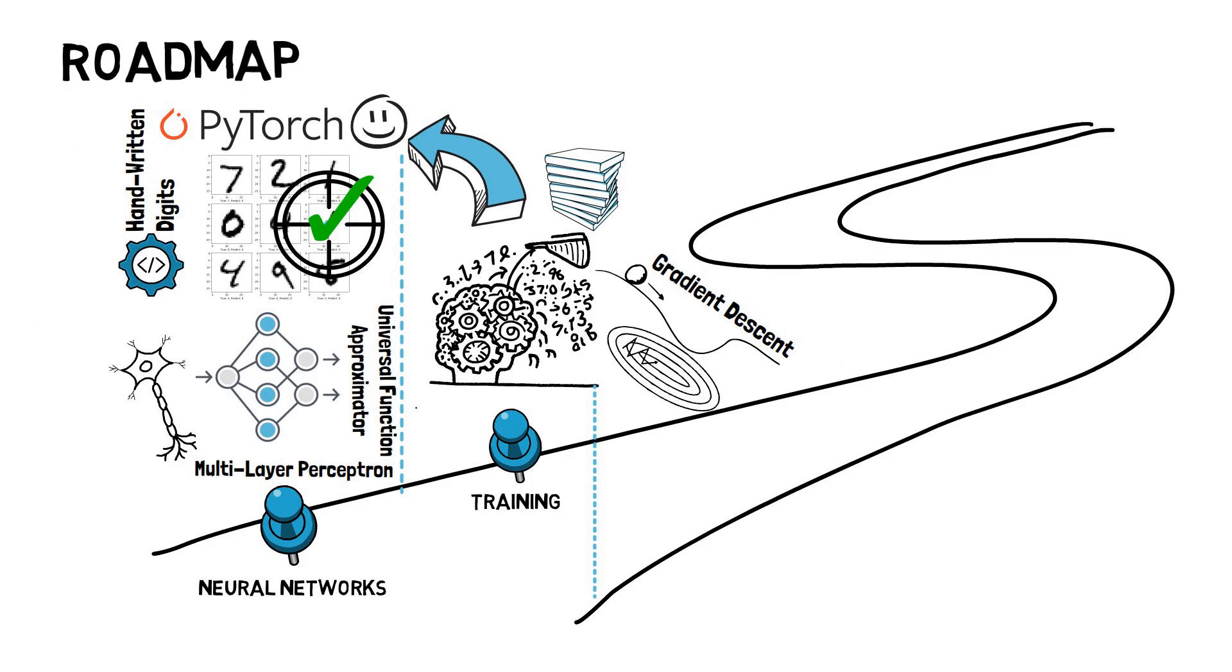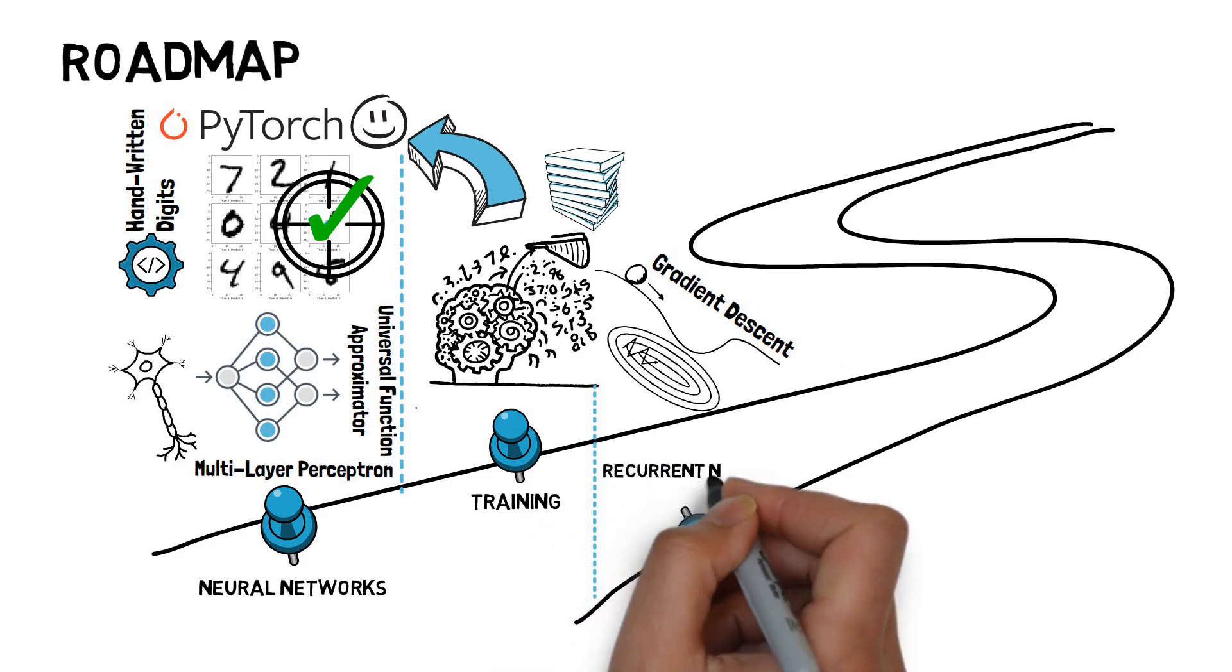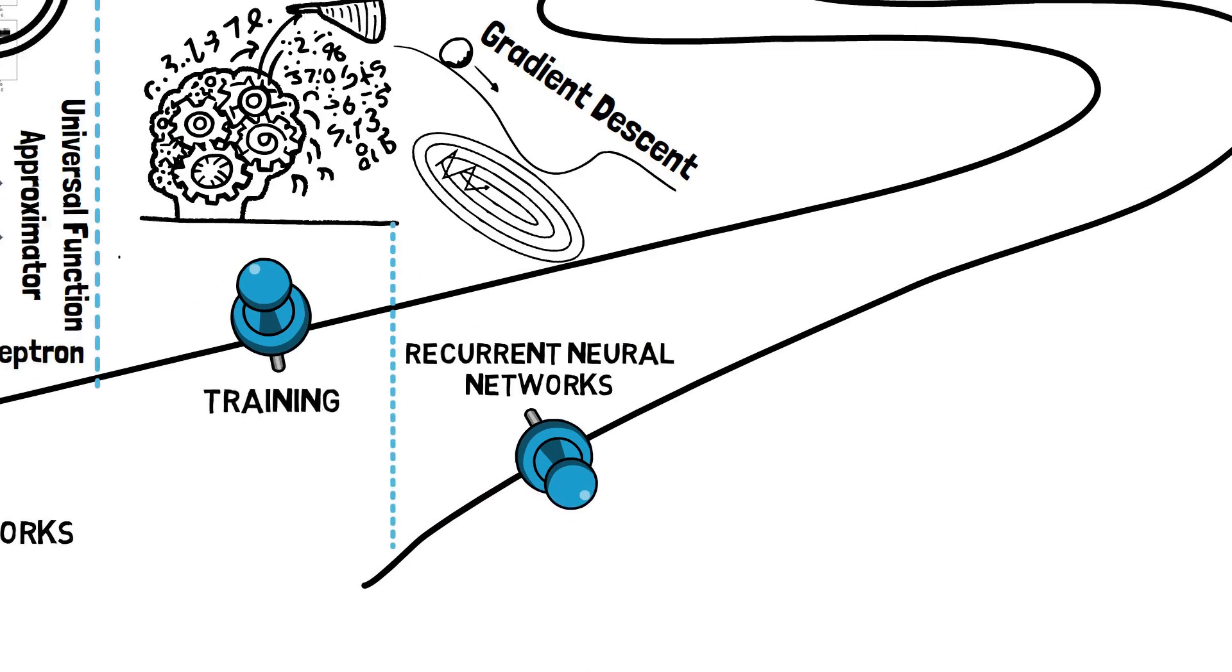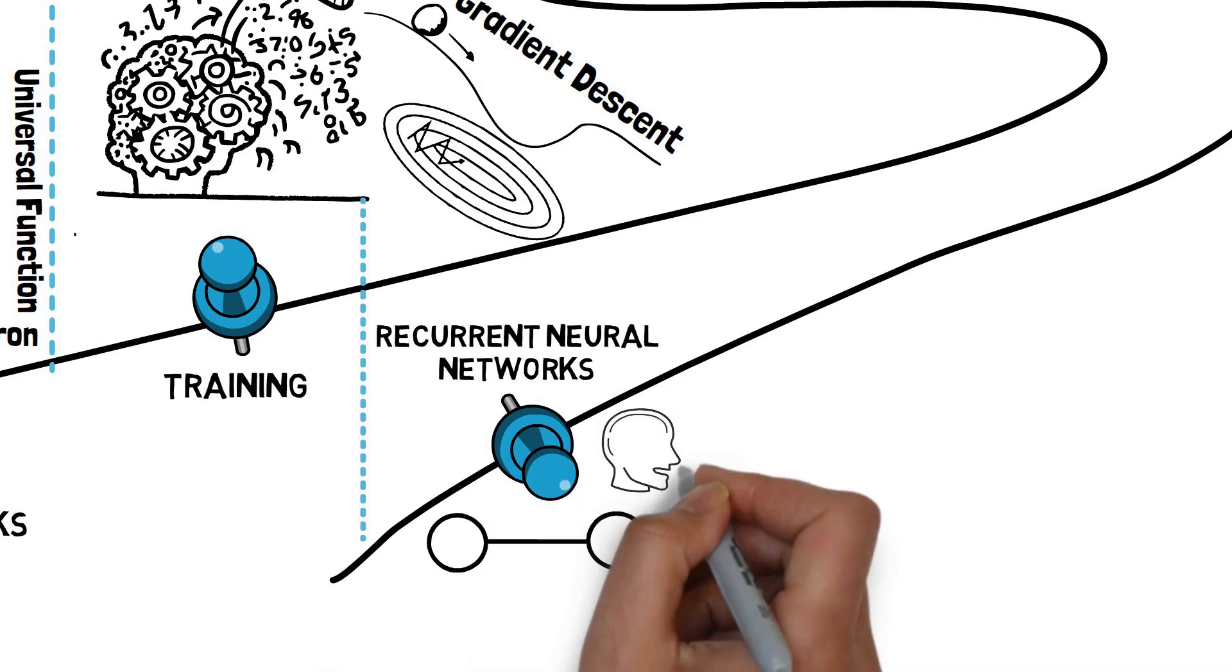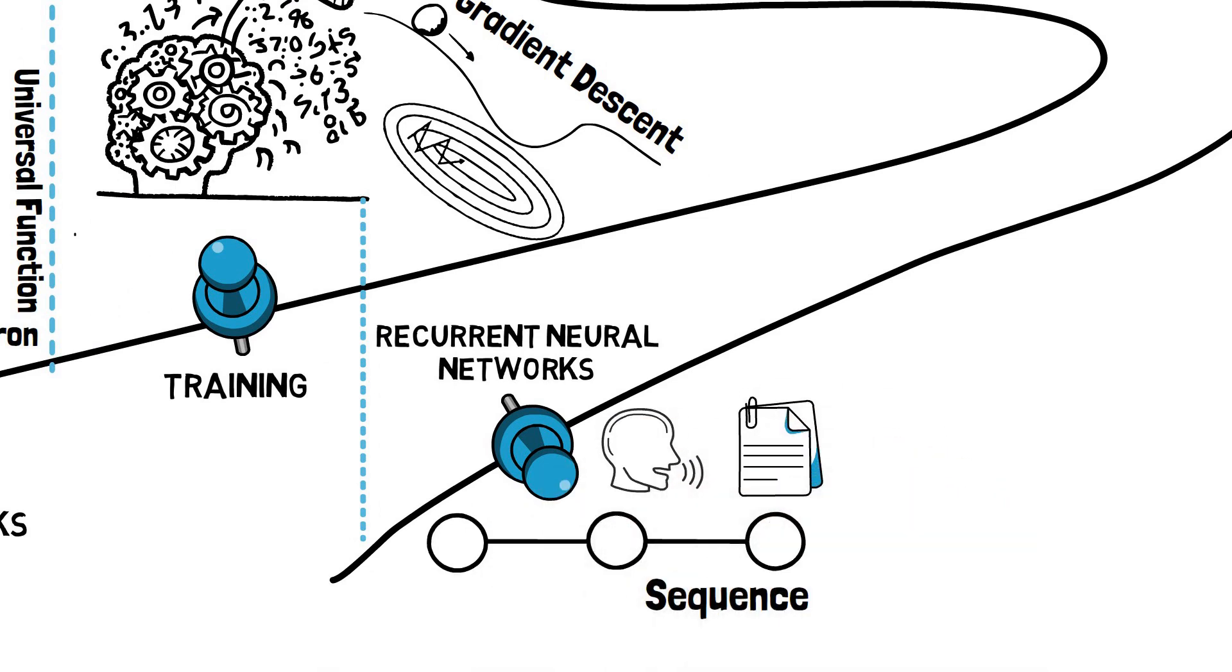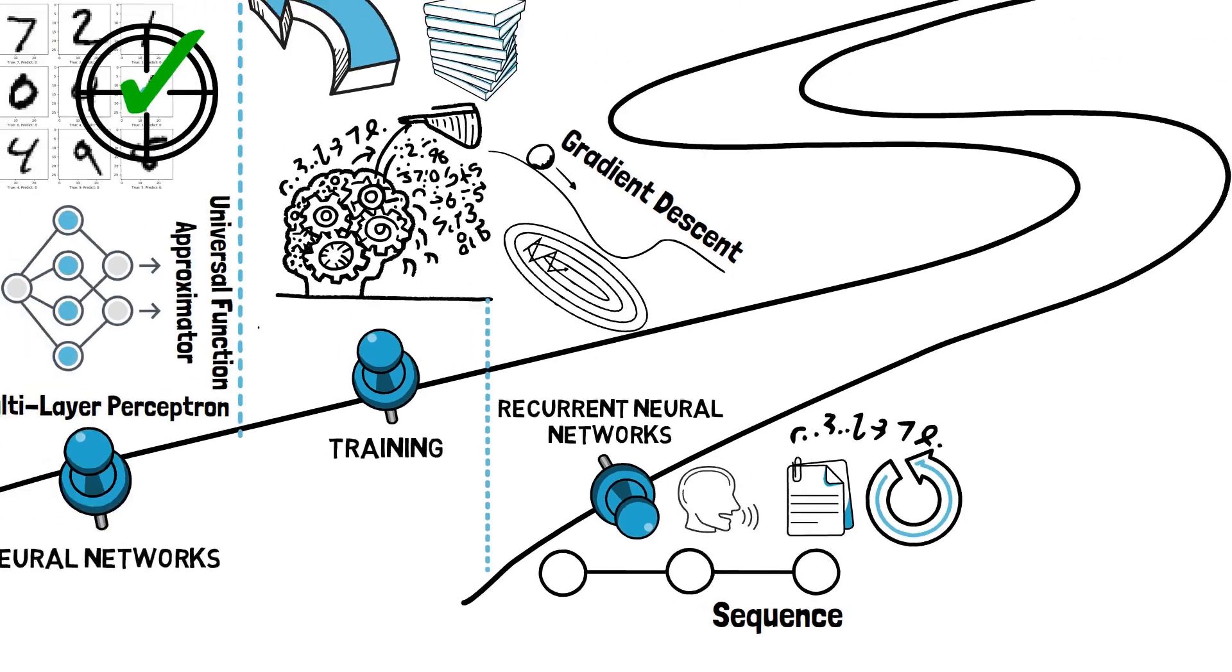Then we'll move on to recurrent neural networks, or RNNs. We'll look at how to model sequence problems, such as speech recognition and text generation. And in the lab, we'll be crafting a character RNN to generate text. And this will take us a step closer to LLMs.